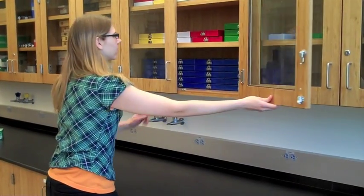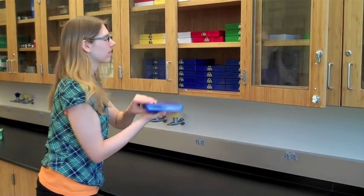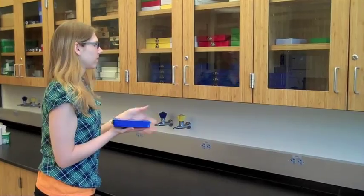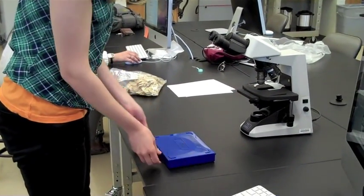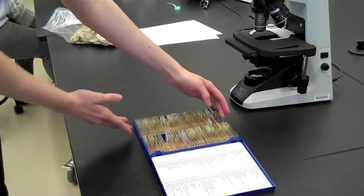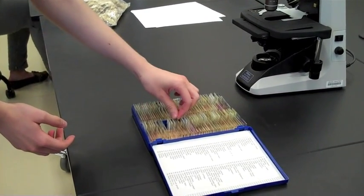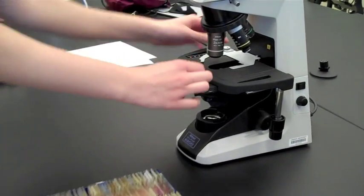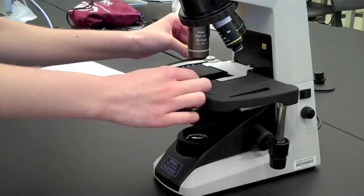Go obtain a slide box from the cabinet for viewing. Handle carefully because they are very expensive. Open the slide box. Find your desired slide and place it onto the microscope stage. Make sure the slide is face up on the stage.